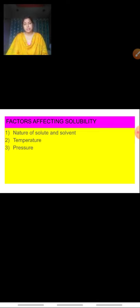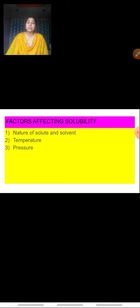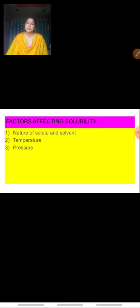The first factor that affects solubility is the nature of solute and solvent. A polar solute always dissolves in a polar solvent. For example, water is a polar solvent — it can dissolve polar solutes like NaCl. NaCl is ionic in nature, having a negative pole and a positive pole, so it dissolves easily in water. Simply put: polar dissolves in polar, non-polar dissolves in non-polar.